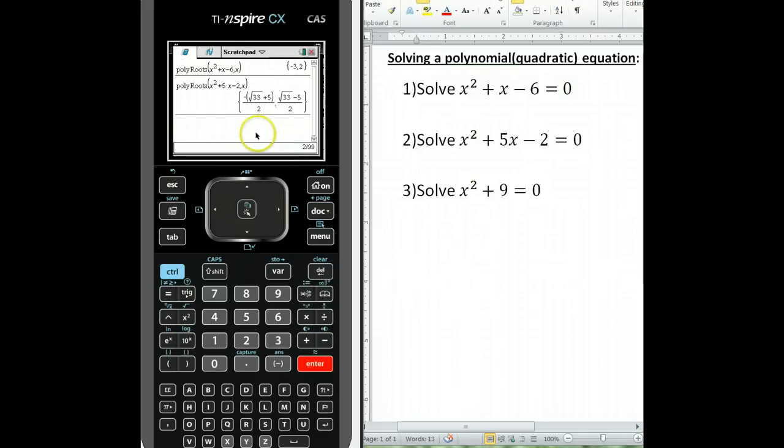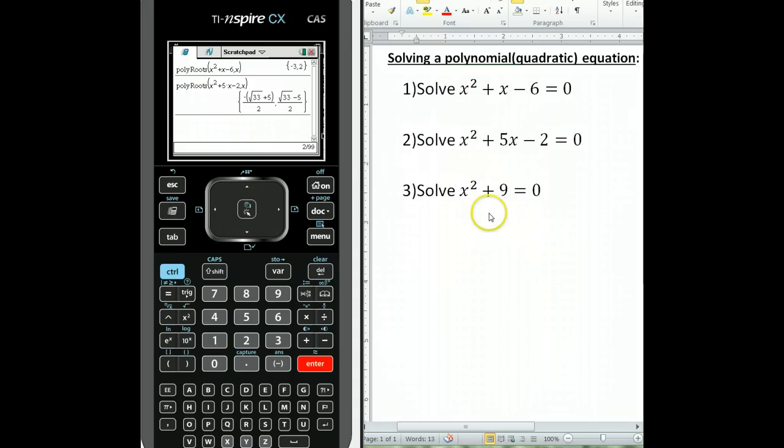Let's run through this one last time with example number 3. But before we do that, let's talk about what the solutions for this quadratic equation might look like. We know if we took x squared plus 9 equal to 0, and we subtracted 9 from both sides, we'd have x squared equals negative 9.